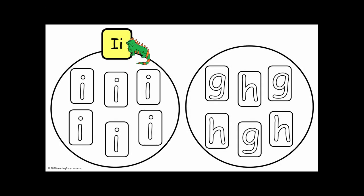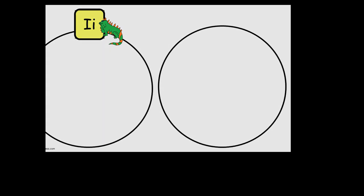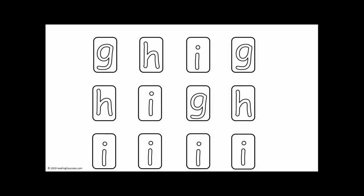This is the I letter sorting activity. Children have to choose from the letters I, G, and H, and decide to put the I's in the I circle and the G's and H's in the other circle. The templates are the sorting board and the letters.